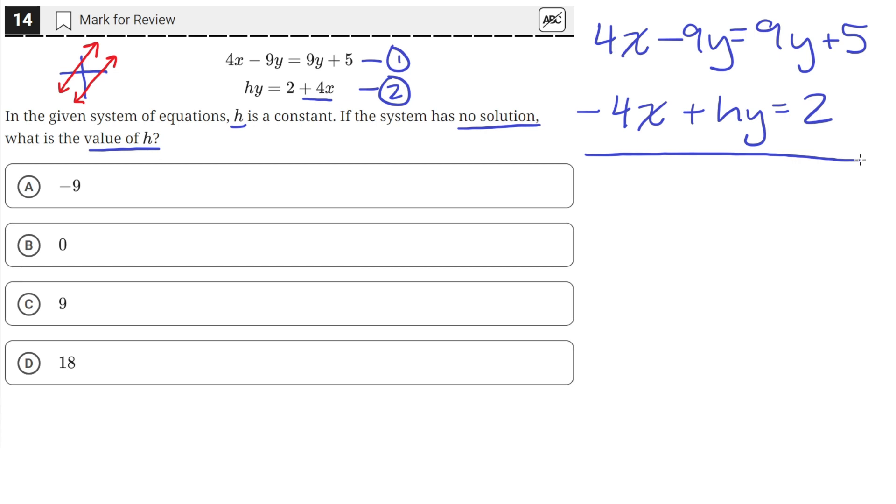So now let's just eliminate the x variable by adding these two equations together. We can do that since these are equations. That means these sides are equal, and since you're adding equal quantities to both sides, you're not changing the equation.